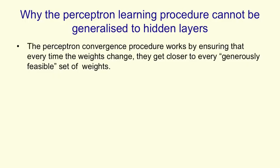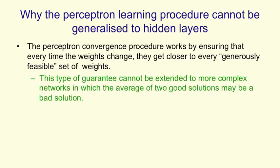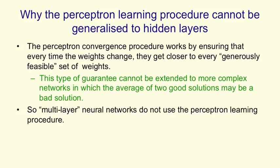The perceptron convergence procedure works by ensuring that when we change the weights, we get closer to a good set of weights. That type of guarantee cannot be extended to more complex networks, because in more complex networks, when you average two good sets of weights, you might get a bad set of weights. So for multilayer neural networks, we don't use the perceptron learning procedure.